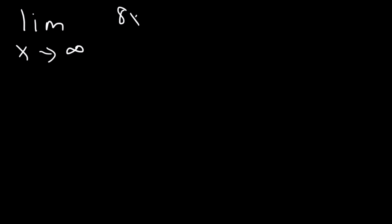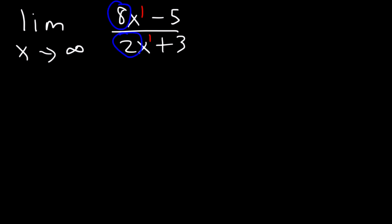Now let's work on something else. What is the limit as x approaches infinity of 8x minus 5 divided by 2x plus 3? Notice that the degree of the numerator is the same as that of the denominator — they're both to the first power, so they're in the first degree. Whenever the degree of the numerator and the denominator are the same, you can simply divide the coefficients. So 8 divided by 2 is 4. Therefore, this is going to equal 4.